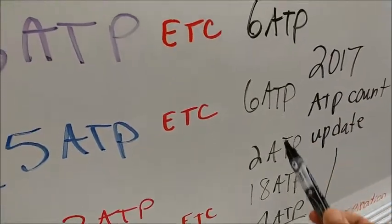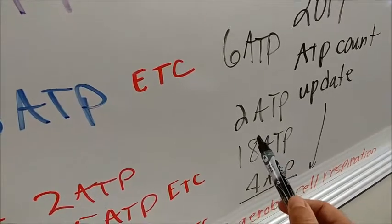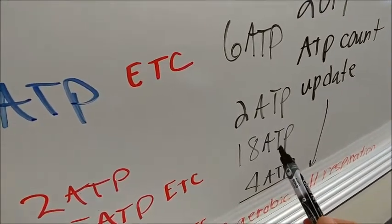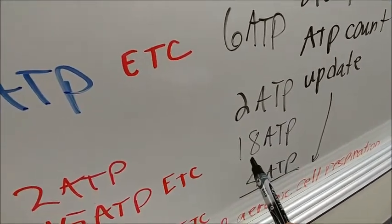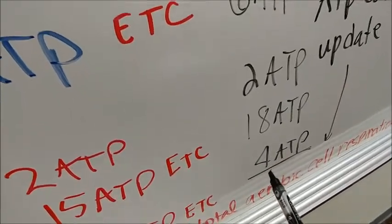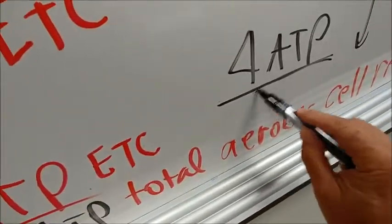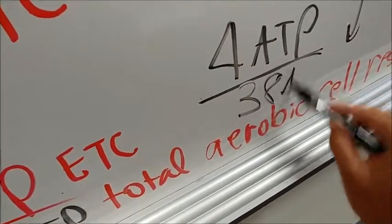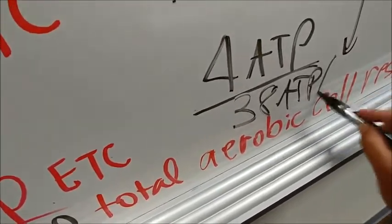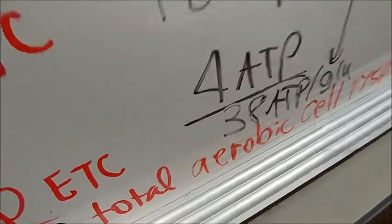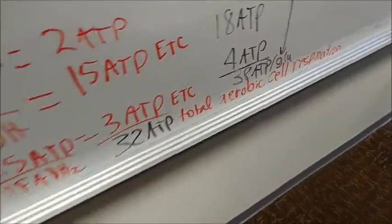8 plus 6 is? 14. 14 plus 2. 16. And 16 plus 18, 34. And then four more? 38. So this is the old count, 38 ATP per molecule of glucose breakdown in aerobic respiration.